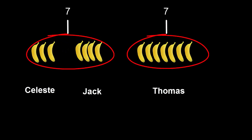Coincidentally, this is the same number of bananas that Thomas brought. It looks like adding three and four bananas together is the same as having seven bananas. We can write that in a quicker way by putting a plus sign between Celeste and Jack's bananas to show that we're putting them together, and an equal sign here to say that three and four together add up to seven.